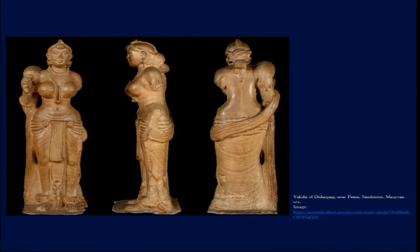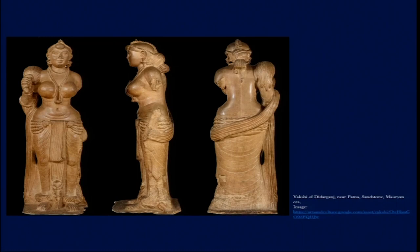Something really significant about this sculpture is its particular kind of polish. This polish is typical of Mauryan sculptures and Mauryan pillars and is not seen in sculptures from later times or from before the Mauryan period. These sandstone sculptures are polished to such an extent that they become shiny as marble. They have at times been confused with marble, but it was later found that they are indeed sandstone. This extraordinary polish is something we do not fully understand today, and it was not continued in later time periods.